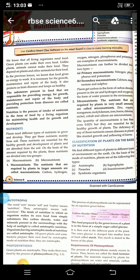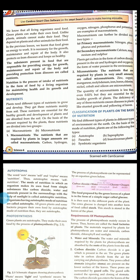Plants need two different types of nutrients to grow and develop. They get these nutrients mainly from soil. Our body also needs nutrients. Plants also need nutrients, and they get their nutrients from the soil. These nutrients are essential for the healthy growth and development of plants and are absorbed from the soil. On the basis of the amount required by plants, these nutrients are divided into two groups.